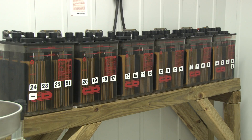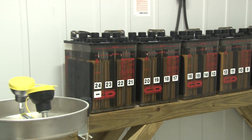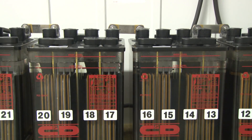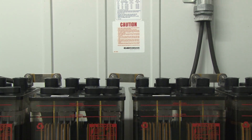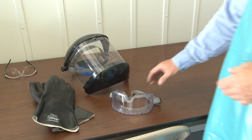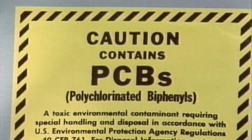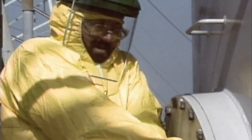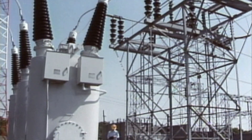Other hazards in substations and switchyards are chemicals, which can include any liquid or gas that can harm you if not handled properly. For example, battery acid is a chemical that can burn your skin and damage your clothing if you don't wear the proper protective gear. PCBs are chemicals that are highly toxic, and you should observe special precautions if there's a chance you could be exposed to PCBs.